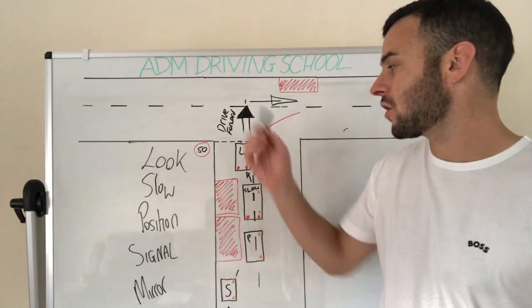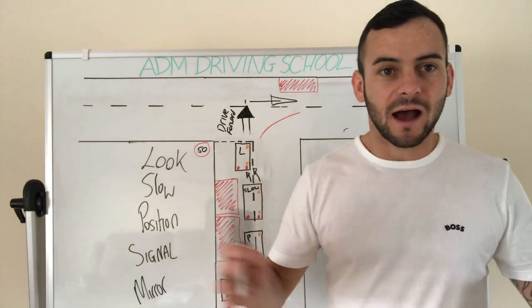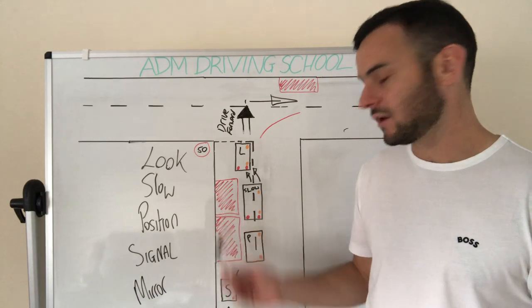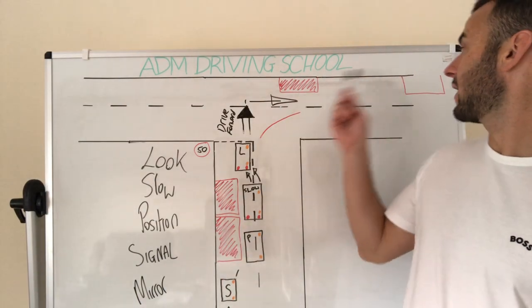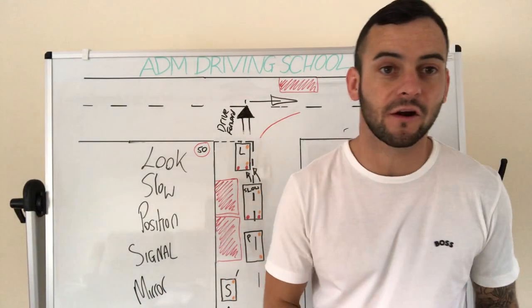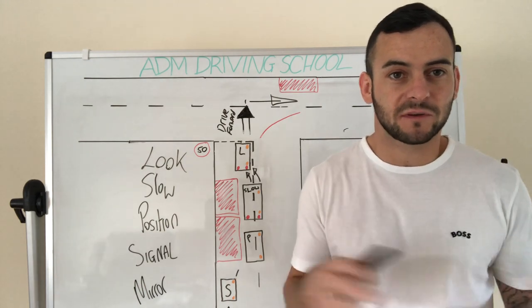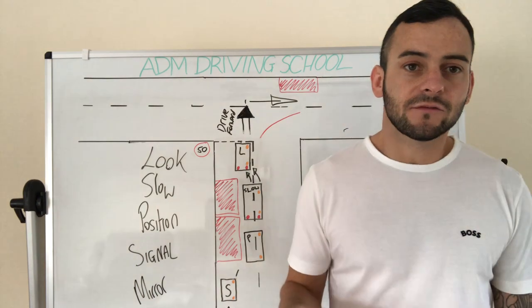Just imagine this is in a more narrow housing estate now. And you know yourself from your lessons, usually there'll be cars parked here. There'll be a car parked here. And more cars along here. This is where I see people lose a lot of marks for position turning right.